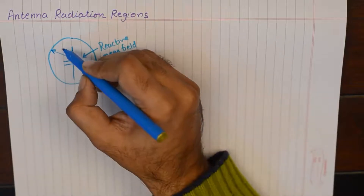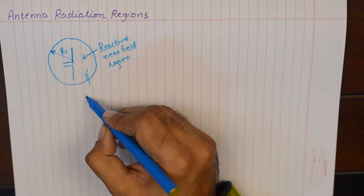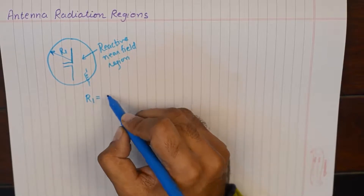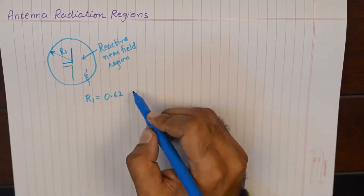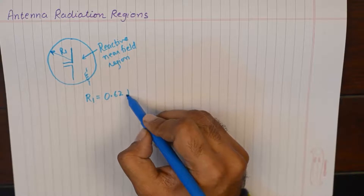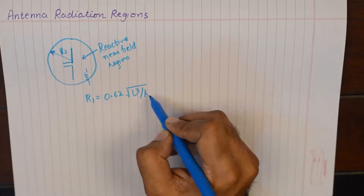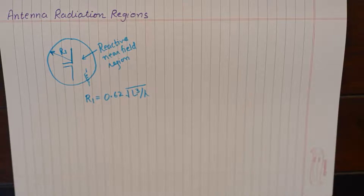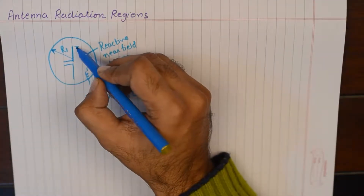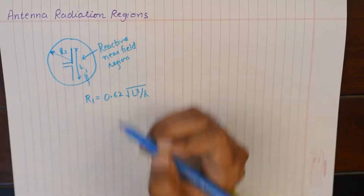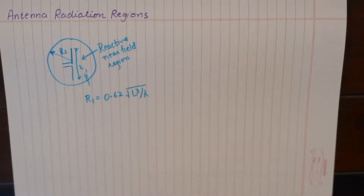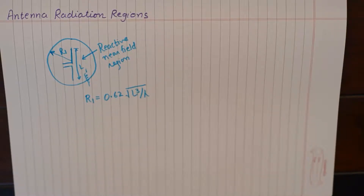The radius of the reactive near field region is characterized by r1. Here, L is the longest dimension of the antenna. In case of aperture antennas, L will be the longest dimension — either the length or the broader side. In case of a parabolic antenna, it will be the radius.